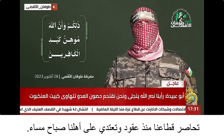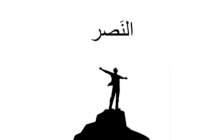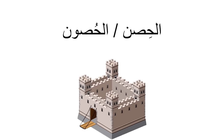First of all, I want you to memorize this list of nouns — only nouns first. The first noun is 'al-nassr,' which means 'victory.' Next, we have 'al-hissn,' which means the fortress or the castle.